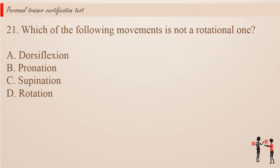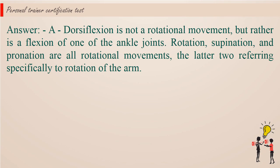Question 21. Which of the following movements is not a rotational one? a. Dorsiflexion. Answer: a. Dorsiflexion is not a rotational movement, but rather is a flexion of one of the ankle joints. Rotation, supination, and pronation are all rotational movements, the latter two referring specifically to rotation of the arm.